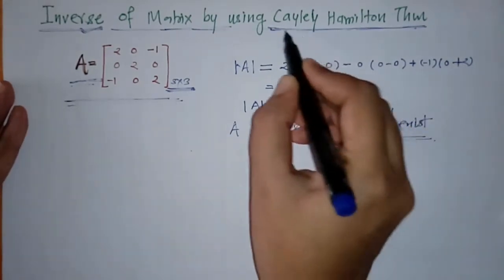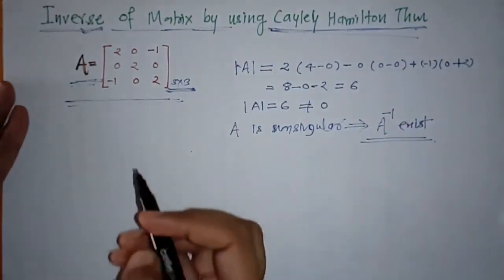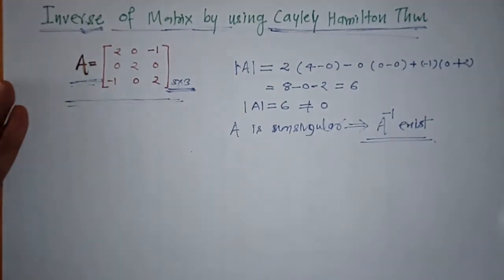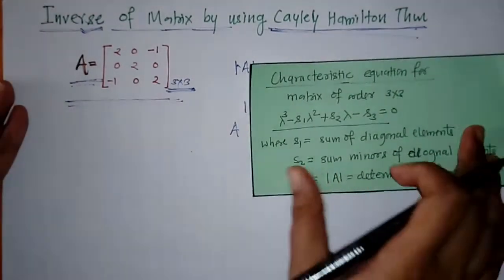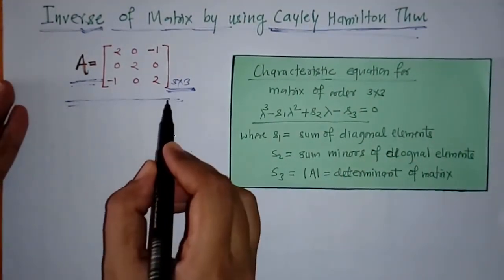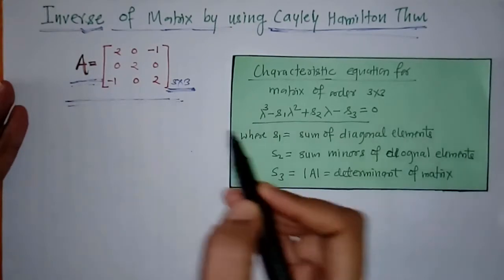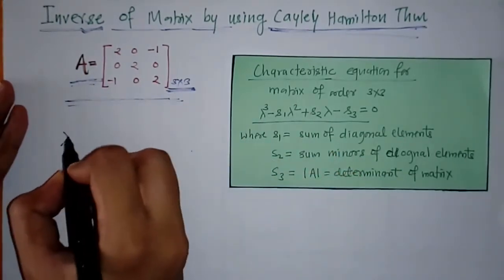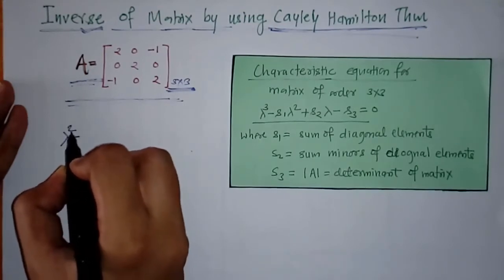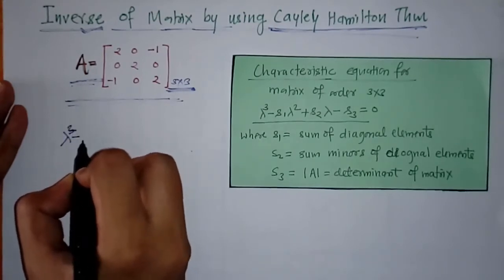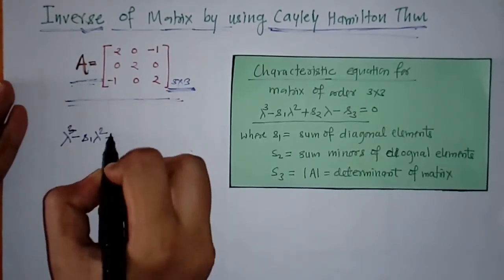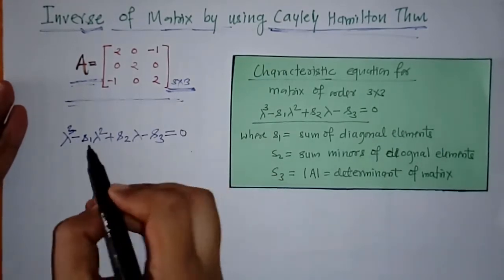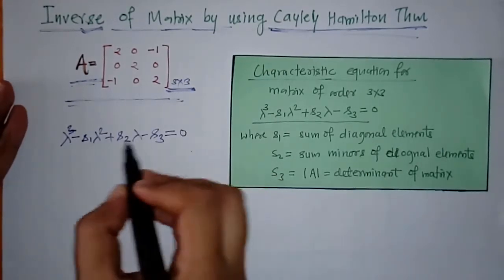For finding A-inverse by using the Cayley-Hamilton theorem, we will first find the characteristic equation. We know what the characteristic equation is for a matrix of order 3×3: it is given by λ³ − S₁λ² + S₂λ − S₃ = 0.